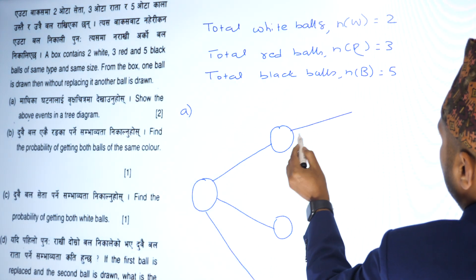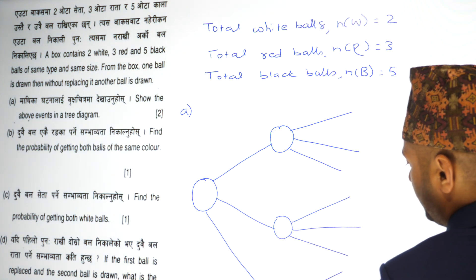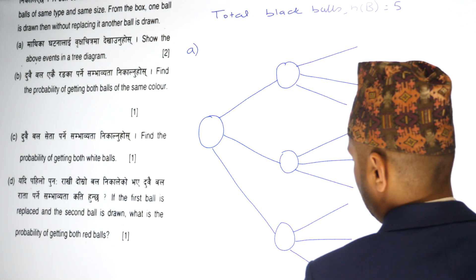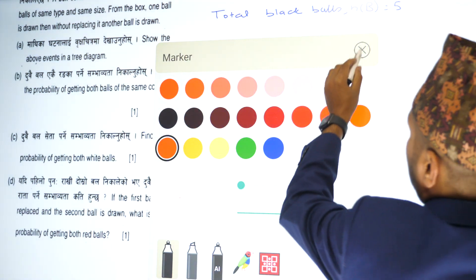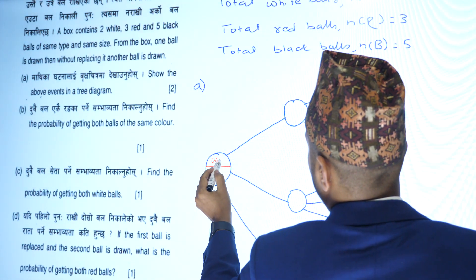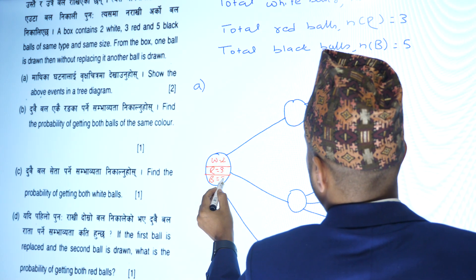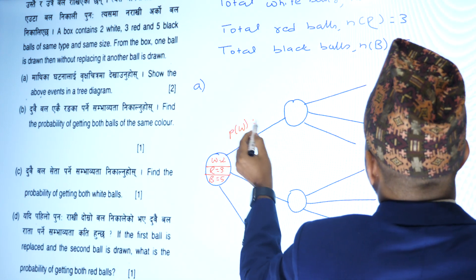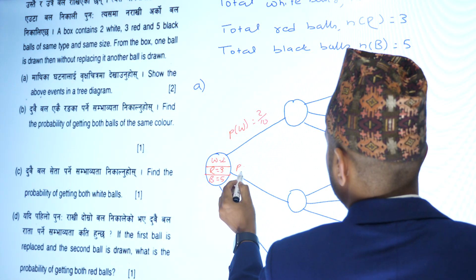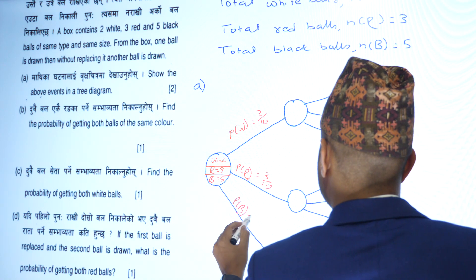Looking at the tree diagram, for the first draw: total is 10. White balls NW = 2, so probability of white = 2/10. Red balls NR = 3, so probability of red = 3/10. Black balls NB = 5, so probability of blue = 5/10.